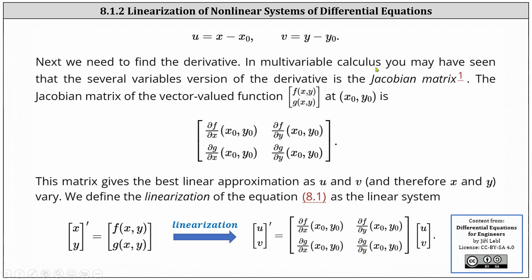Next we need to find the derivative. In multivariable calculus, you may have seen that the several-variables version of the derivative is the Jacobian matrix. The Jacobian matrix of the vector-valued function given by f(x,y), g(x,y) at the critical point (x₀, y₀) is a given 2×2 matrix. In the first row, we have the partial of f with respect to x and the partial of f with respect to y, both evaluated at (x₀, y₀). In the second row, we have the partial of g with respect to x and the partial of g with respect to y, both evaluated at (x₀, y₀). This matrix gives the best linear approximation as u and v, and therefore x and y, vary. We define the linearization as the linear system: the derivative of vector (u, v) equals the Jacobian evaluated at (x₀, y₀) times the vector (u, v).